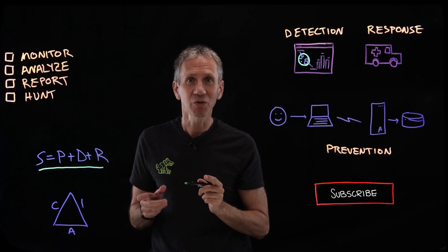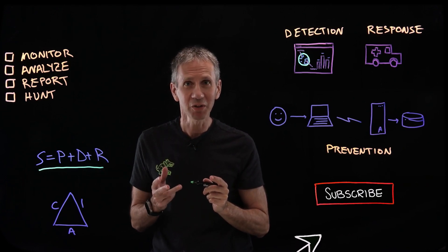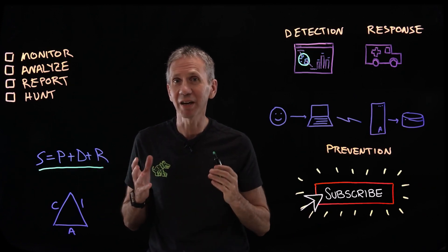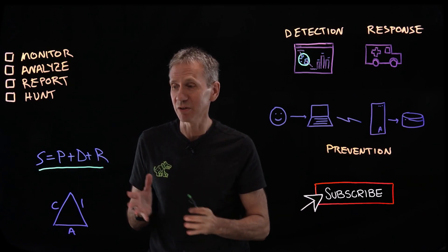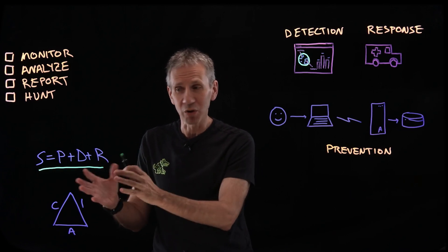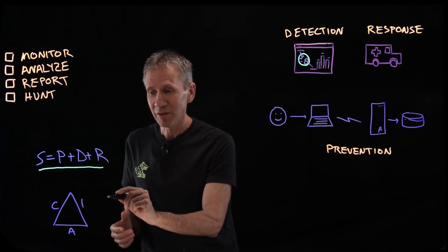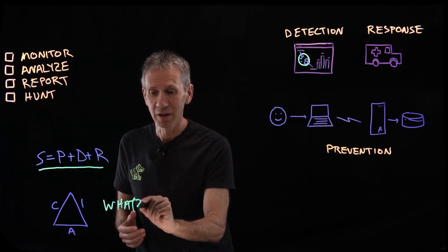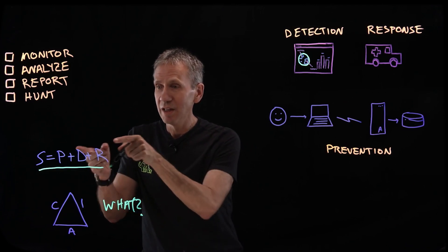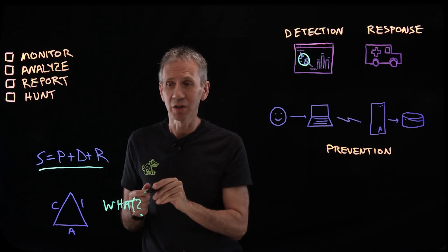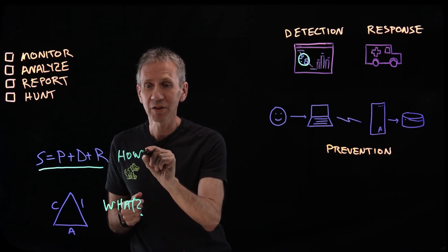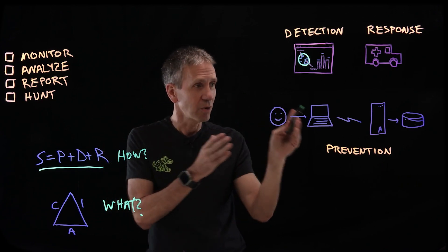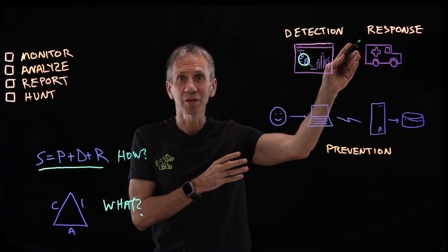Remember the CIA triad mentioned in the second video of this series? It's about confidentiality, integrity, and availability — that's the what of cybersecurity, what we're trying to do. This equation — prevention, detection, and response — is the how, how we're going to go about doing that.